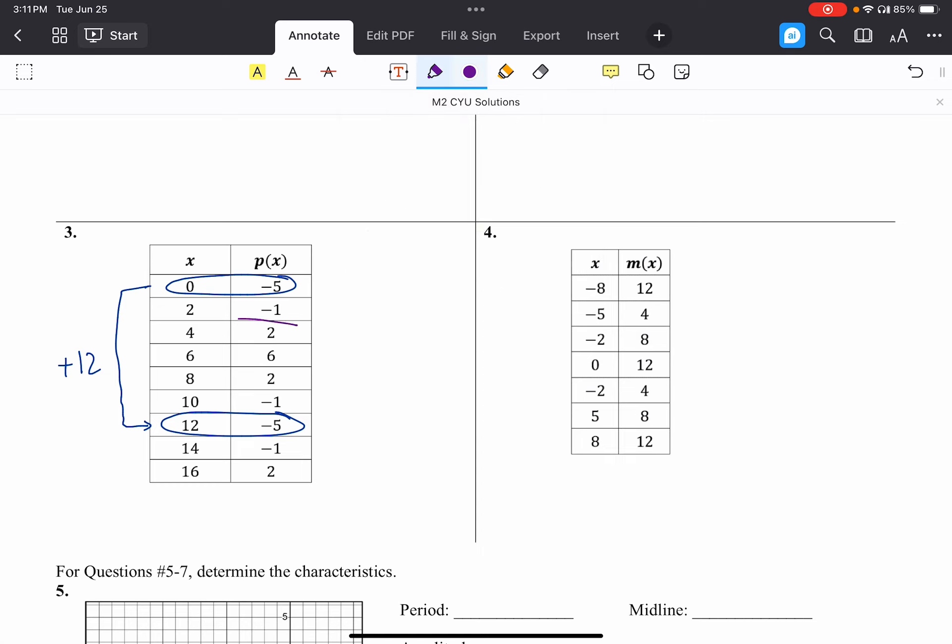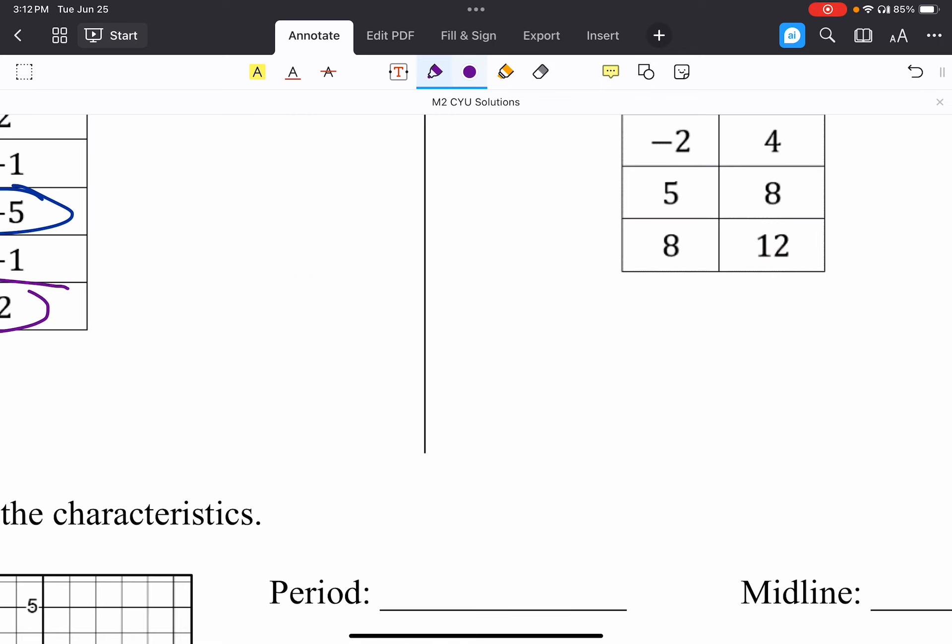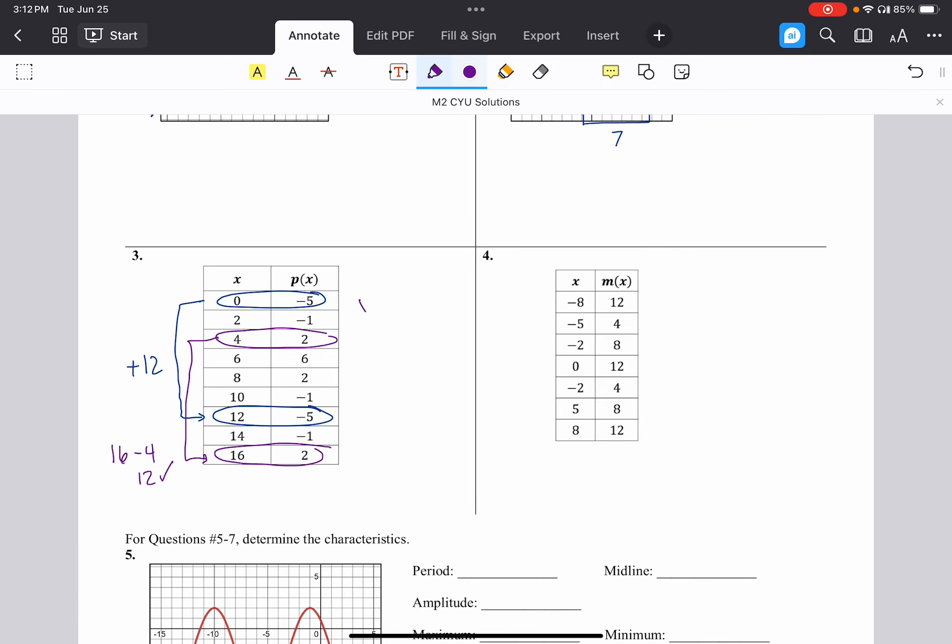I want to double check with a second set of points. So if I take this two right here, so it went negative five, negative one, two, negative five, negative one, two. Are four and 16 also 12 units apart? 16 minus four is 12. Check. So yes, this is periodic with a period of 12.